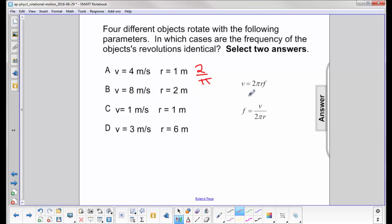Let's do the next one. Velocity is 8, radius is 2. You have 8 over 4π. Hey, that's also 2 over π.